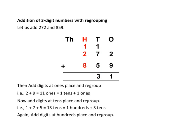add digits at 100's place and regroup. That is, 1 plus 2 plus 8 is equal to 11. 11 hundreds is equal to 1 thousand plus 1 hundred.